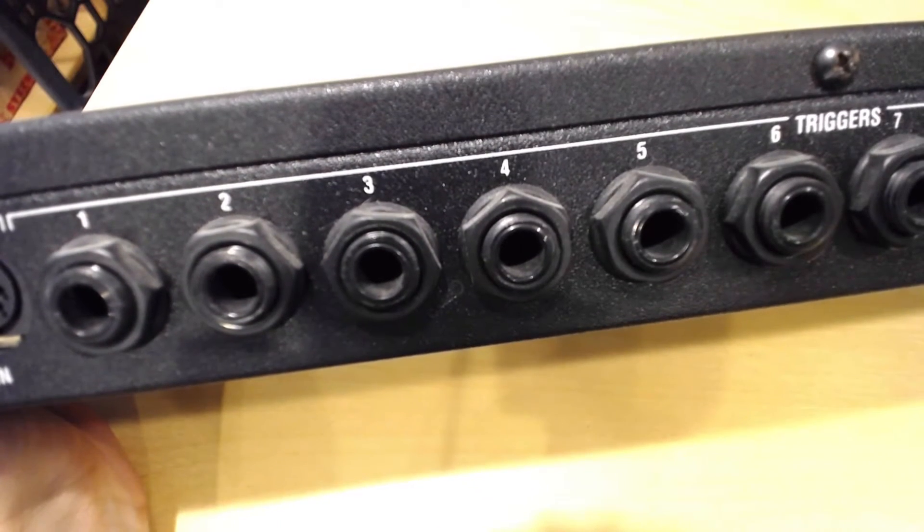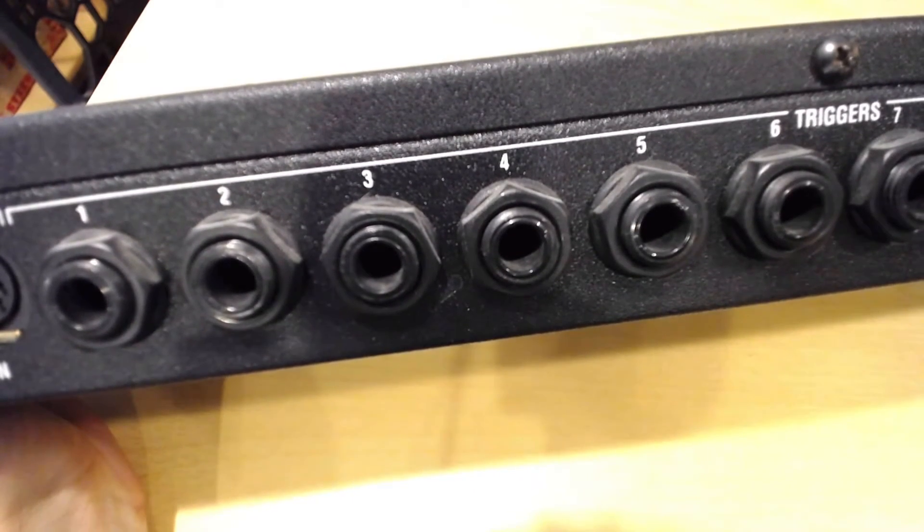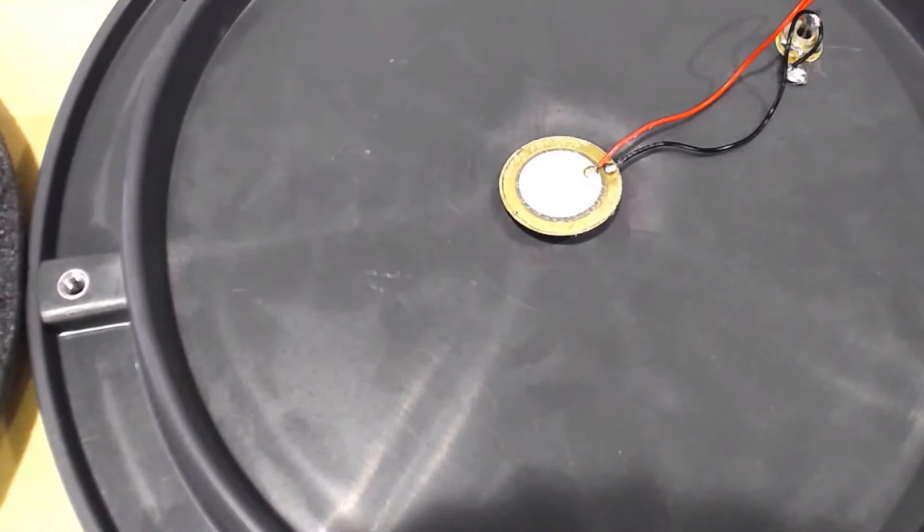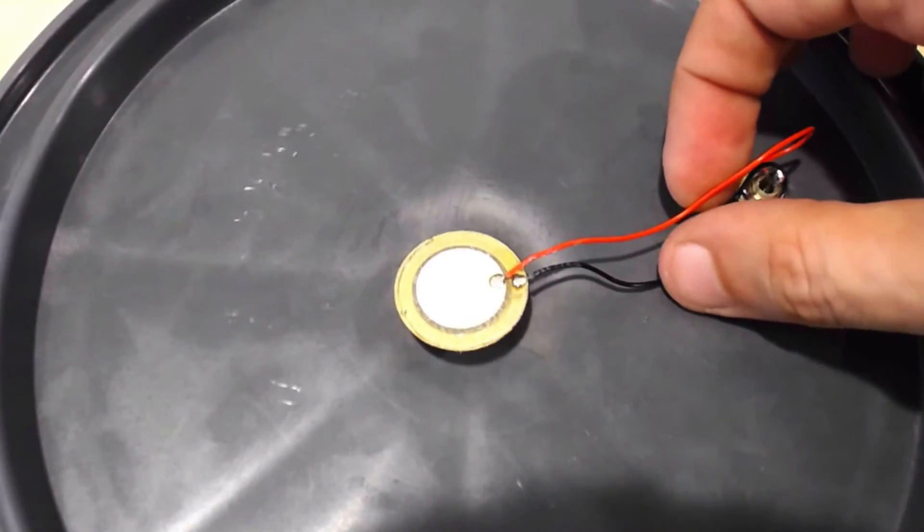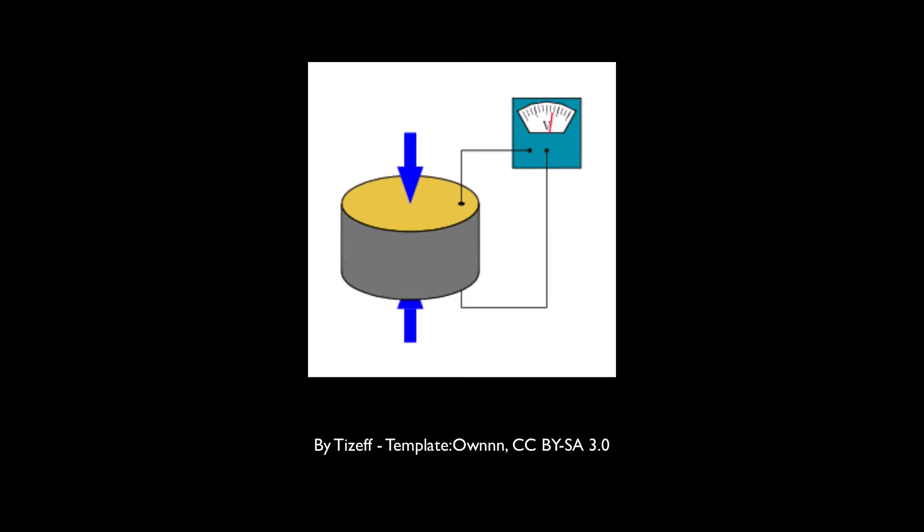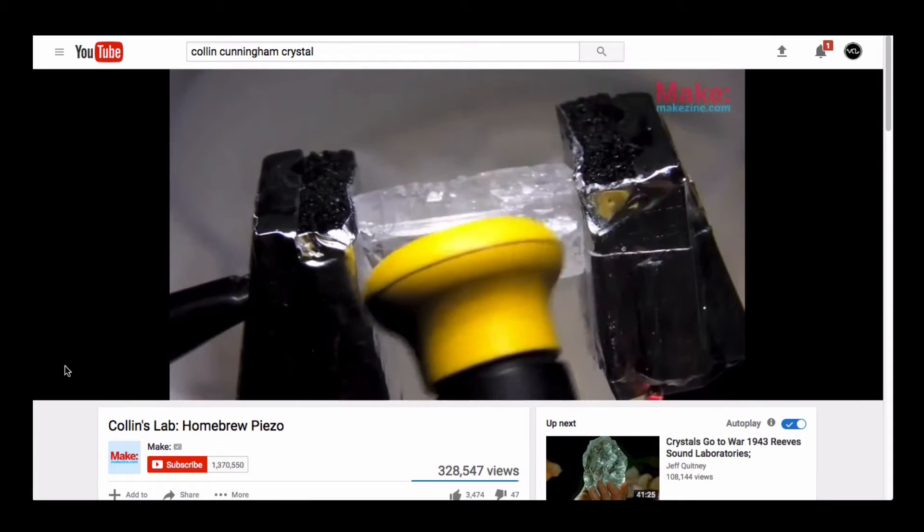A piezo includes two conductive metal discs with a crystal material sealed in between them. When that crystal is excited, a burst of electricity is generated, resulting in voltage passed out of the element.